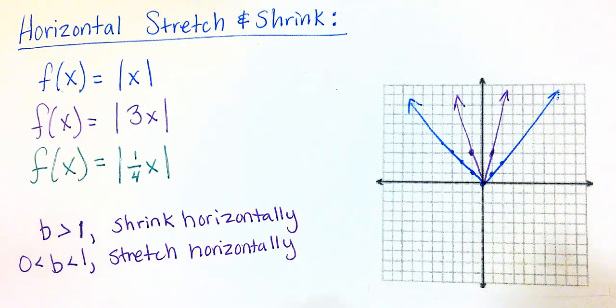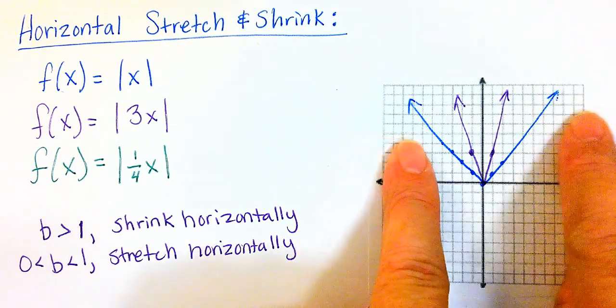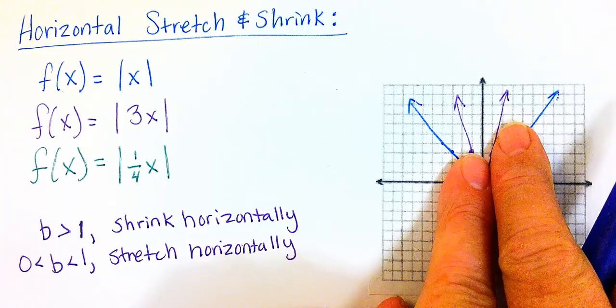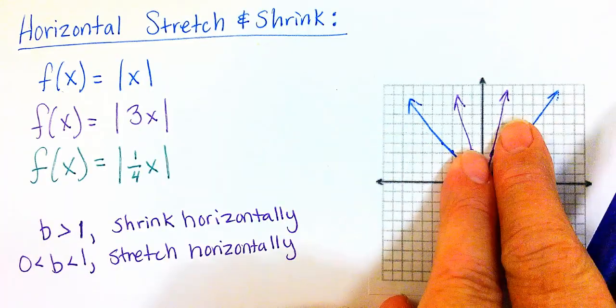So if I look at this in the horizontal direction, I'm shrinking it horizontally. I'm making it smaller. It's getting closer to the y-axis here.